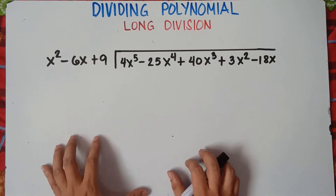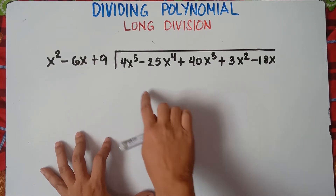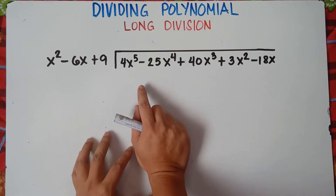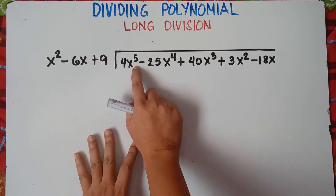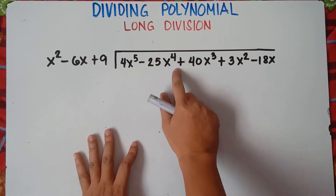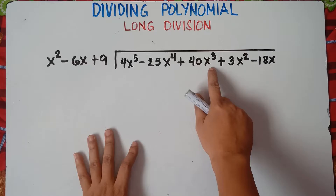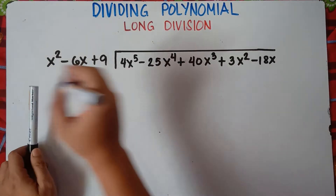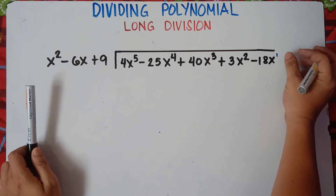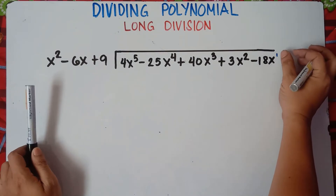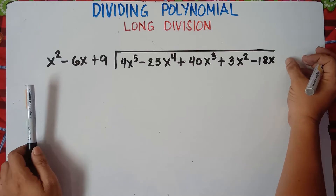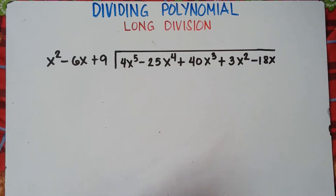When you divide polynomials class, you check the dividend if it's arranged. You check the exponent — the degree. So we have x raised to the power of 5, x raised to the power of 4, x cubed, x squared, and x with exponent 1. Understood that if you don't see any exponent, it's understood to be 1. We don't have a constant, so it's already arranged.